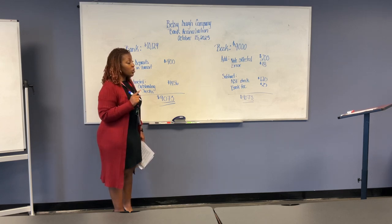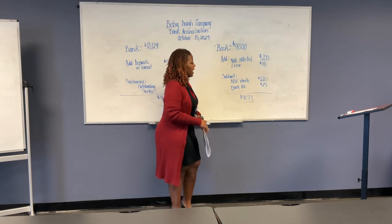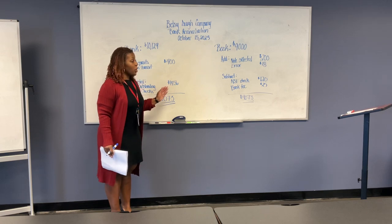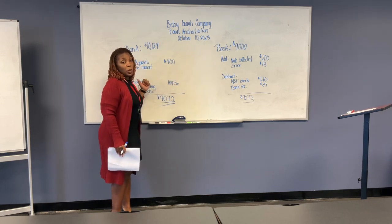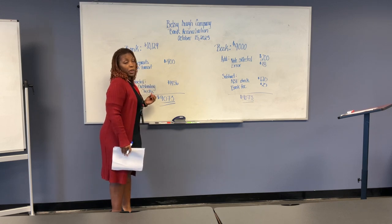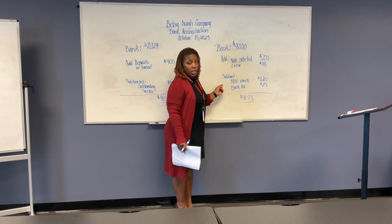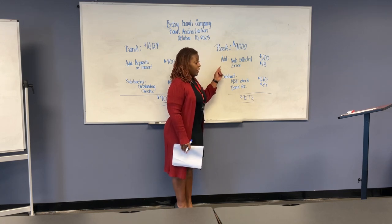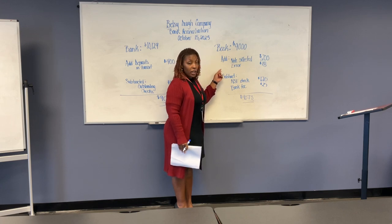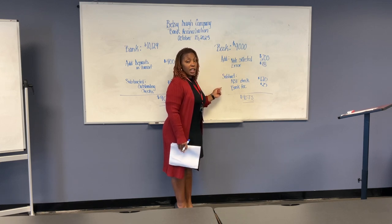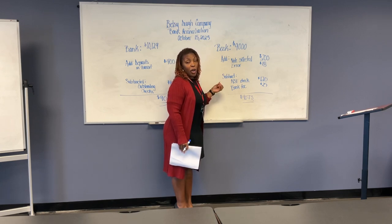There are journal entries included in your bank reconciliation. For bank reconciliation, you can only write journal entries for the book side — we can't change what the bank has done. The bank has its own paperwork; we can only handle our information. So these entries will need a journal entry to show these changes: the addition of the note collected, the error made, and the NSF check and bank fee. These entries need to be included in your general journal to be posted and then reflected in your trial balance.